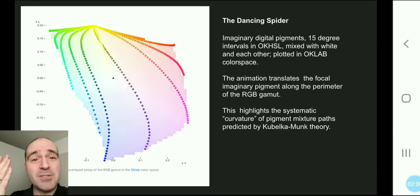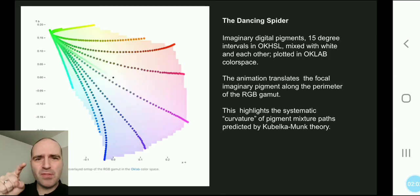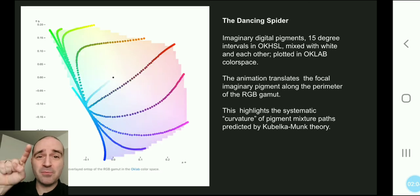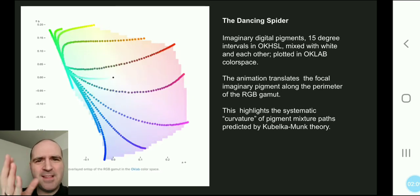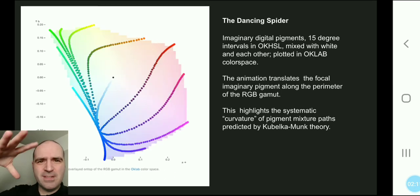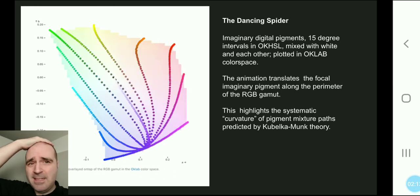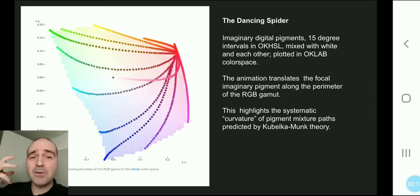Here is an animation showing you how, as I move that imaginary focal pigment around the perimeter of RGB space, the different curves of those paths kind of weave in interesting ways. And I think there's a lot to be studied here, and I don't even know where to begin.